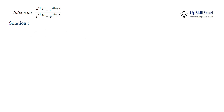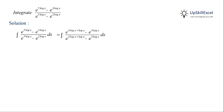We observed that in the numerator we have two terms: e raised to 5 log x and e raised to 4 log x. So we can write the first term e raised to 5 log x as e raised to 4 log x plus log x.